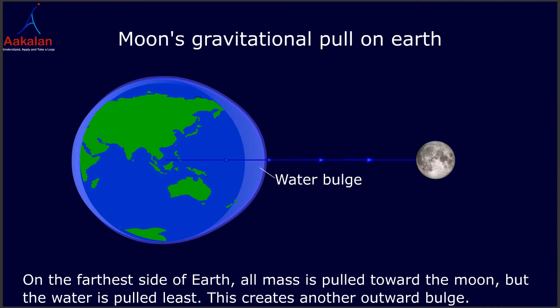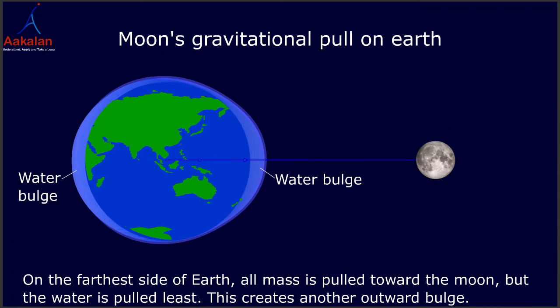On the farthest side of earth, all mass is pulled toward the moon, but the water is pulled least. This creates another outward bulge.